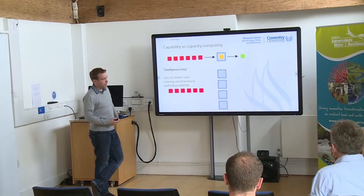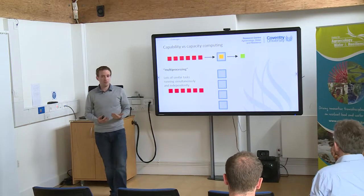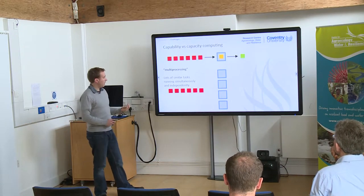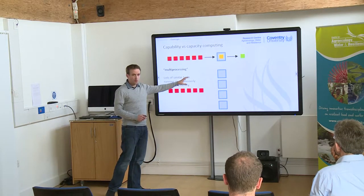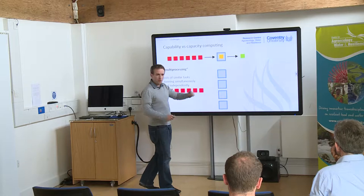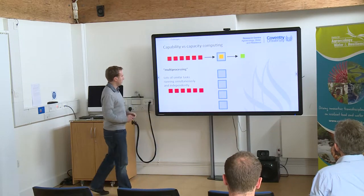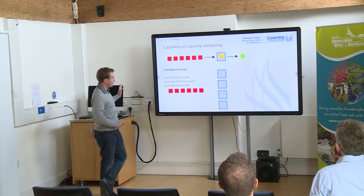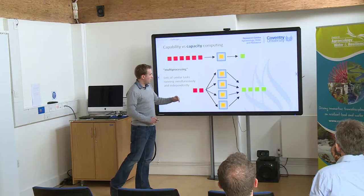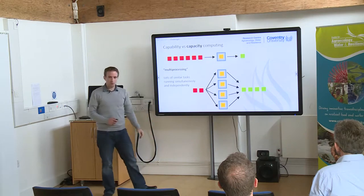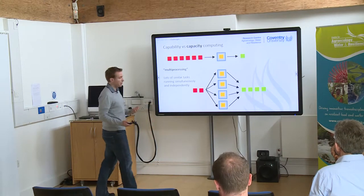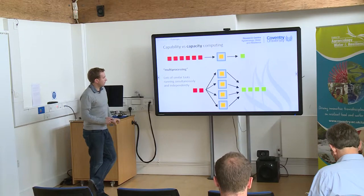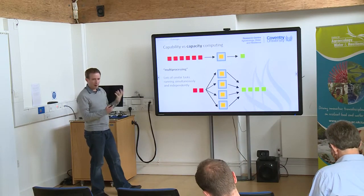In multiprocessing, we take advantage of there being more than one processor. My MacBook has four processors, so in principle I could distribute tasks across four different processors. You might leave one to deal with running the computer, but three can be used to run lots of similar tasks simultaneously and independently. Sending tasks to four processors and producing output, we get through that queue of jobs much more quickly — in principle four times as fast as using a single processor. This is what we refer to as multiprocessing or capacity computing.